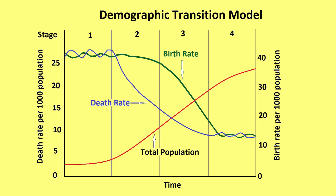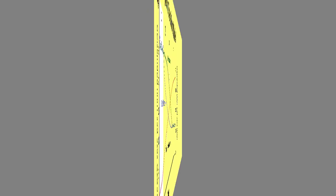The changes in birth and death rates, and their effect on the total population of a country, can be shown on the demographic transition model. The highlighted gap between the birth rate and death rates on the model is the natural increase.